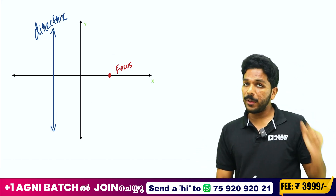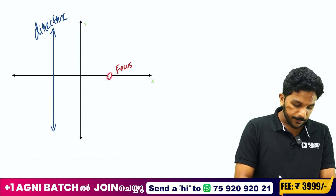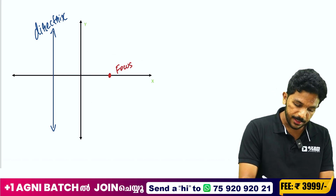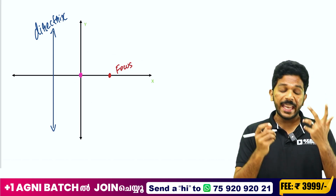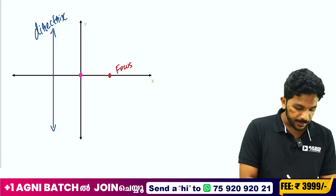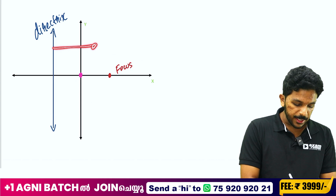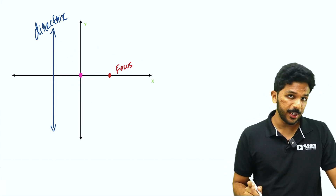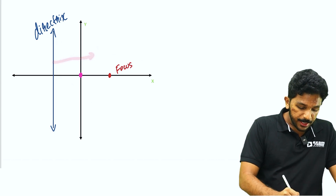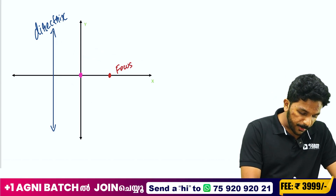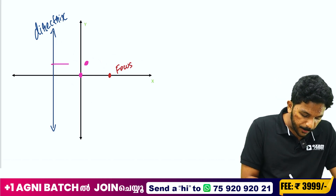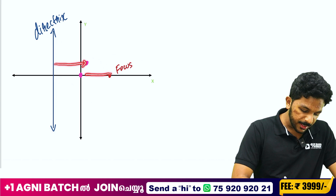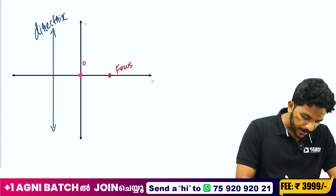The key concept is Equidistant. We have one point and one line. We add a perpendicular distance from the line to a point. Now let's add a point here and look at the perpendicular distance from the line.